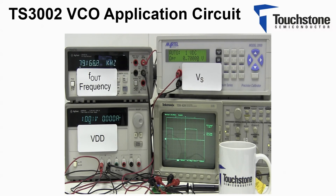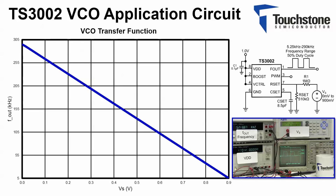The output frequency results in 79 kHz. I have made each frequency measurement for the corresponding VS voltage and have plotted the transfer function. Here is the transfer function for the TS3002 VCO circuit. As expected, the graph is a linear line. This can now be used as a reference for obtaining the desired frequency output based upon the VS voltage.